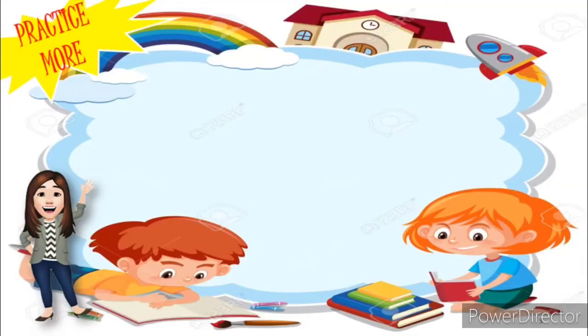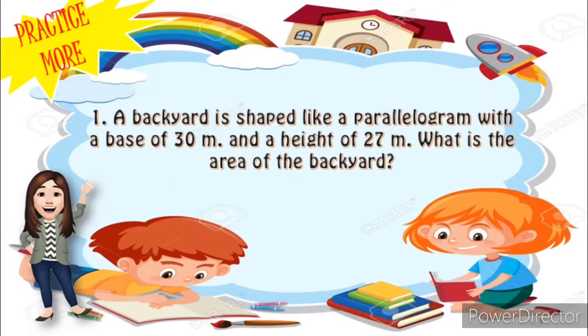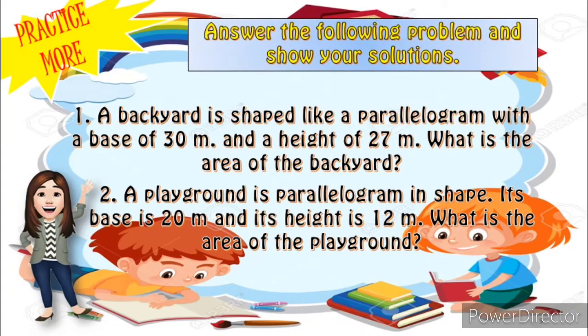To enhance your solving skills, let's have this activity. Answer the following problems and show your solutions. Number 1: A backyard is shaped like a parallelogram with a base of 30 meters and a height of 27 meters. What is the area of the backyard? Number 2: A playground is parallelogram in shape. Its base is 20 meters and its height is 12 meters. What is the area of the playground? Show your solution and write it on one sheet of paper. You may now start solving — good luck!